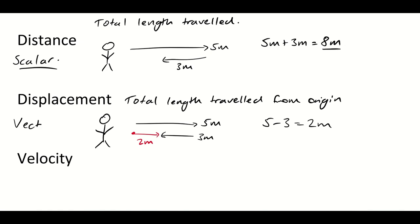Displacement is a vector quantity, because we have to state what direction he's travelled in. If it's a rocket ship, he might be going up and down; if it's a person, left to right. In this case, we can say it is positive 2 metres. If he had gone to the left of the page, that is conventionally the negative direction — like on a Cartesian plane — and he would have gone negative 2 metres.